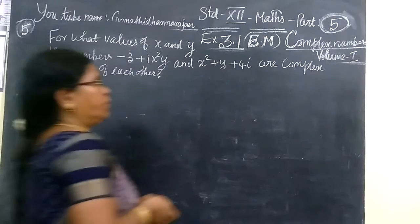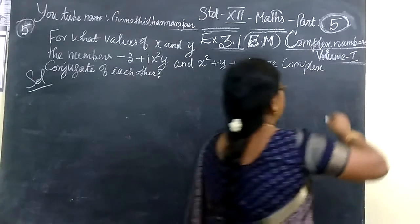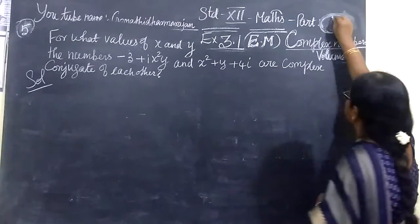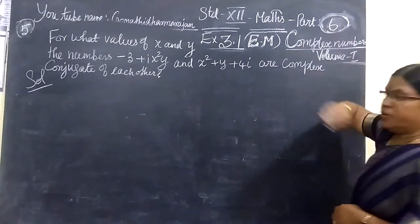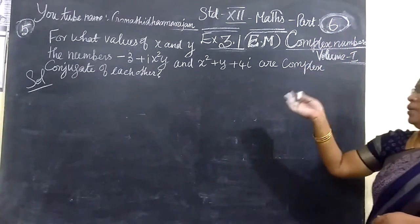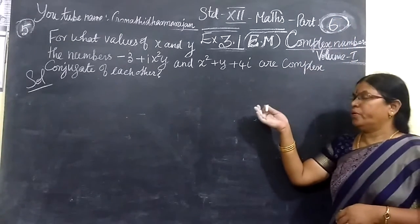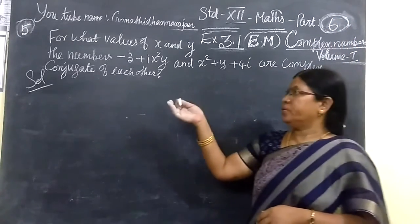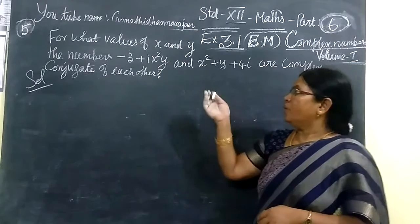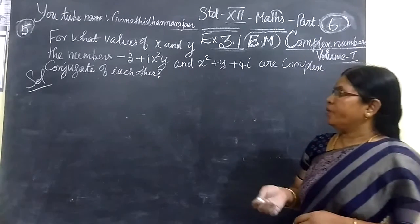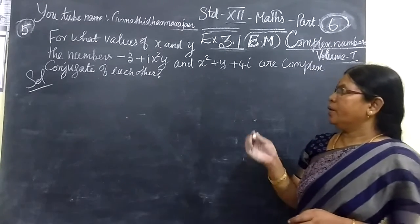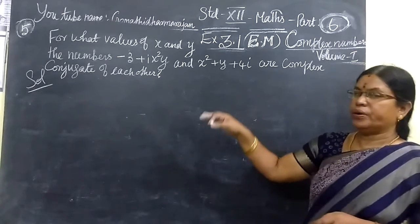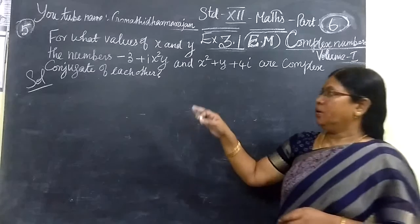Today we will see our teachers. This is the last question in exercise 3.1. For what values of x and y is this number, and this is our conjugate to each other.